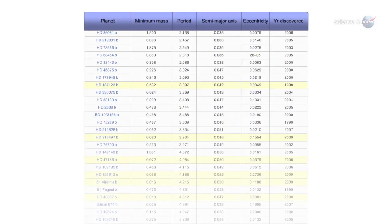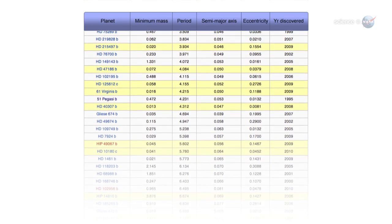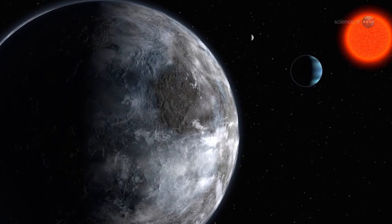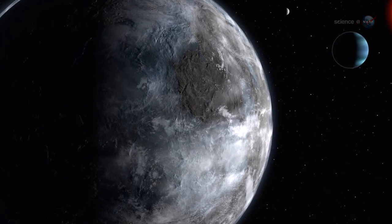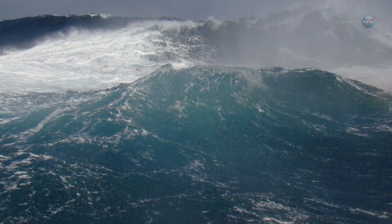As the numbers mount, it seems to be just a matter of time before Kepler finds what astronomers are really looking for: an Earth-like planet orbiting its star in the Goldilocks zone, that is, at just the right distance for liquid water and life.